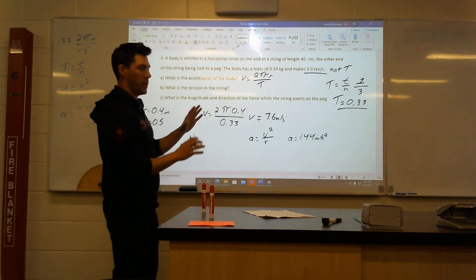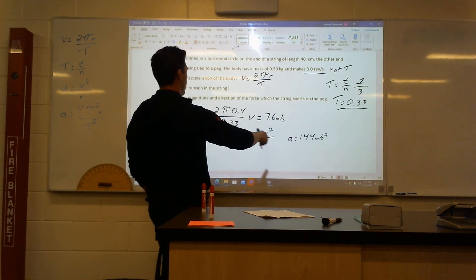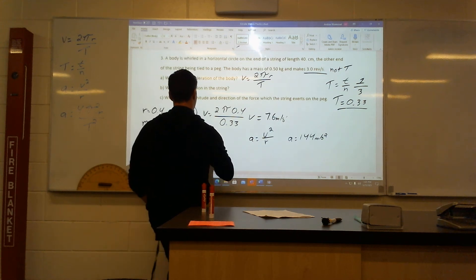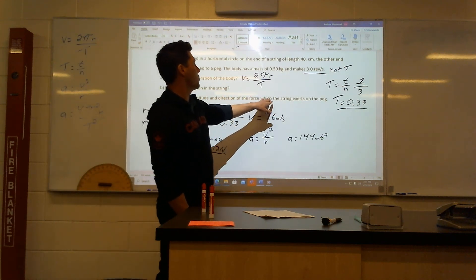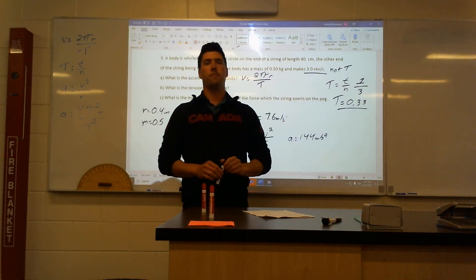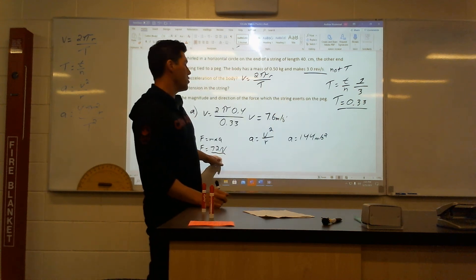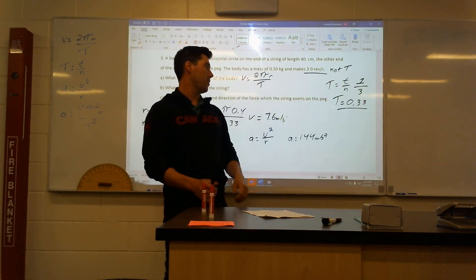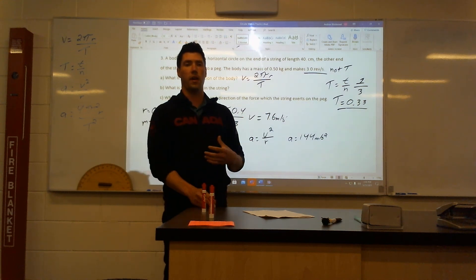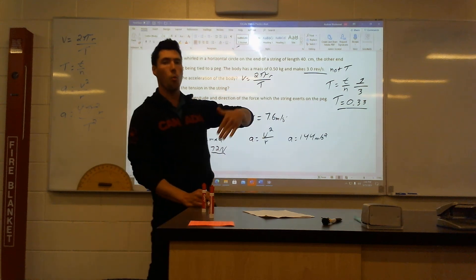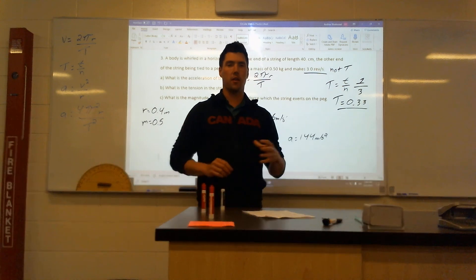For part B, what is the tension? Because it's horizontal, it's just mass times acceleration. Mass is 0.5 times acceleration 144, giving me a force of 72 newtons. For part C, what is the magnitude and direction of the force which the string exerts on the peg? Basically, the string has tension — it's pulling with 72 newtons back inwards. The string is doing 72 newtons of force to keep this thing from flying away, directed back towards the middle of the circle.